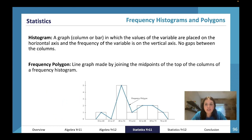Frequency histograms and polygons. A histogram is a graph, a column graph or bar graph, in which the values of the variable are placed on the horizontal axis and the frequency of the variable is on the vertical axis. There's no gaps between the columns. What's important is with a frequency histogram you don't need the gaps; with a column, line, or bar graph you do need the gaps. A frequency polygon is a line graph made by joining the midpoints of any column in a frequency histogram. You start in the bottom left corner of the first bar and end in the bottom right corner of the last bar.